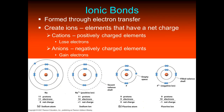Going into more detail on ionic bonds: these are formed through a transfer of electrons — something loses electrons, something gains electrons. When this happens, we create ions, which are elements with a net charge. Cations are positively charged elements that lose electrons; anions are negatively charged elements that gain electrons. In an ionic bond, you always create one cation and one anion — you'll never have two cations or two anions, because something has to lose and something has to gain.